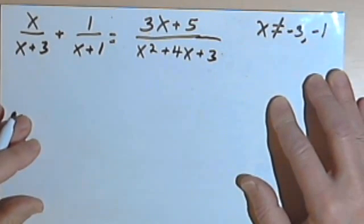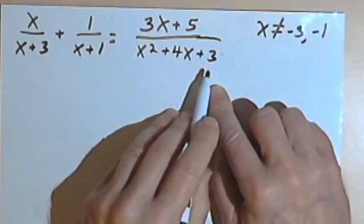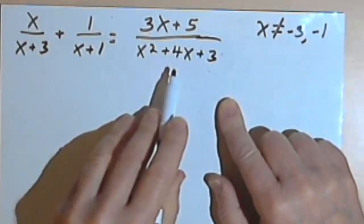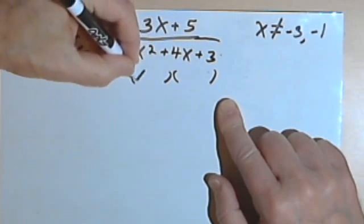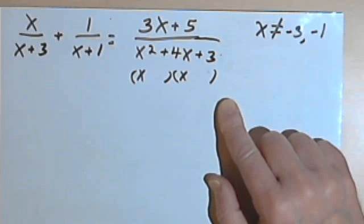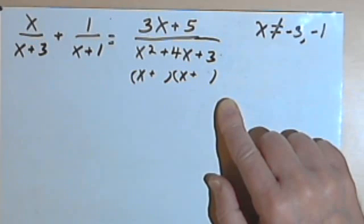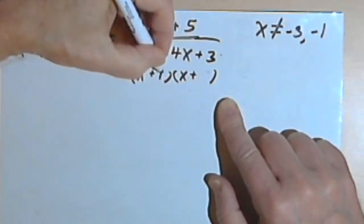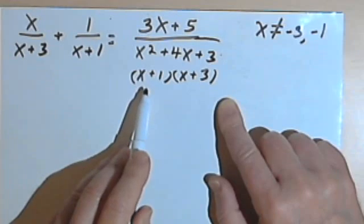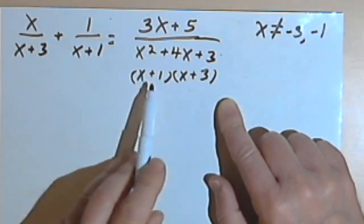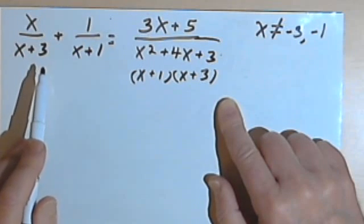Now I've got my excluded values. There's also the fraction on the right, which has a denominator of x squared plus 4x plus 3. To find its excluded values, we have to factor it. Since I've got an x squared as the first term, each binomial will have an x. The signs are positive, so it's x plus something times x plus something. Since the last number is 3, that must be 1 and 3, giving x plus 1 times x plus 3. Those factors are the same as what's already on the left side, so there are no new excluded values.